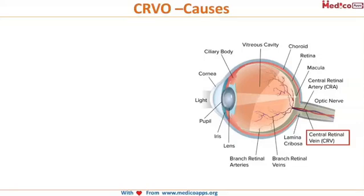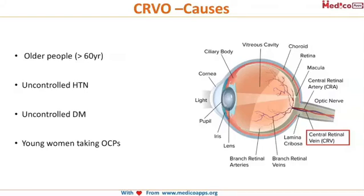Let's look at the causes leading to the occurrence of central retinal vein occlusion. The first one is age, which is the most important predisposing factor. CRVO is commonly seen in people above the age of 60 years, along with our old friends uncontrolled hypertension and uncontrolled diabetes.